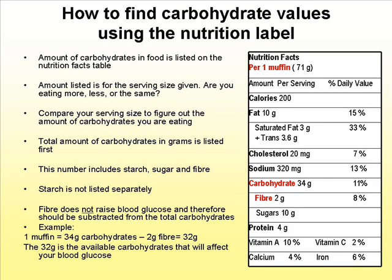Let's move on to label reading. If you have a food that contains a label, you can find the carbohydrate value using the nutrition label. If it doesn't have a label, go back to the list — for fruits and some vegetables that don't have a label, use that list as a guide. But if the food has a label, please look at the label. The amount of carbohydrates in food is listed on the nutrition facts table, and the amount listed is for the serving size given.